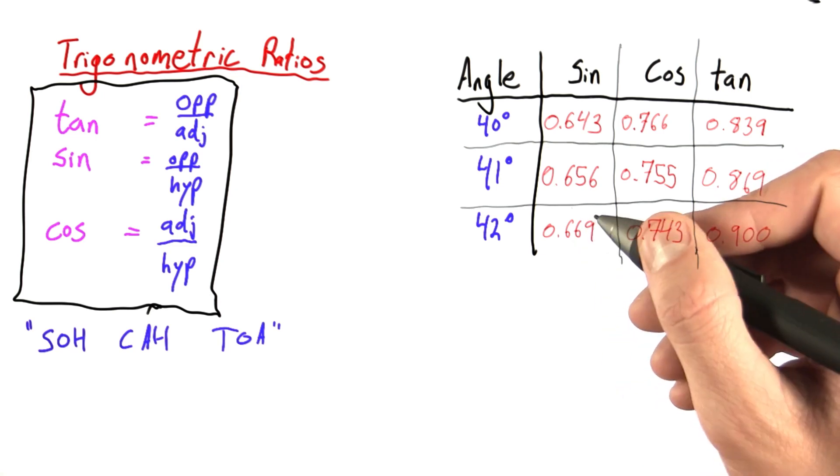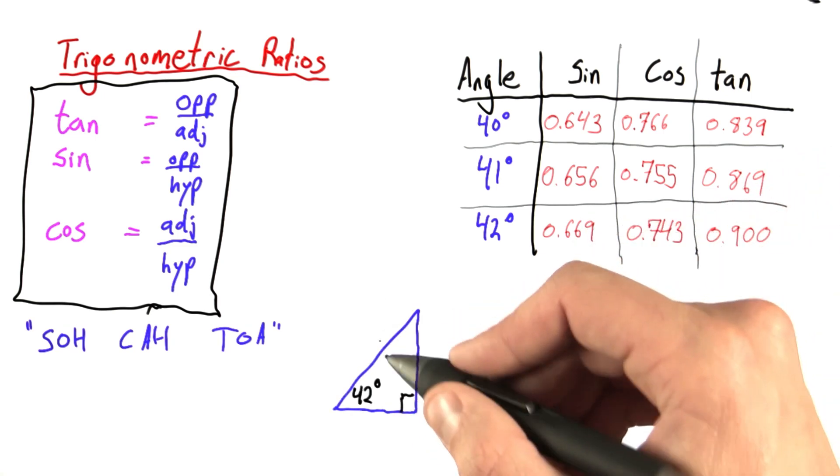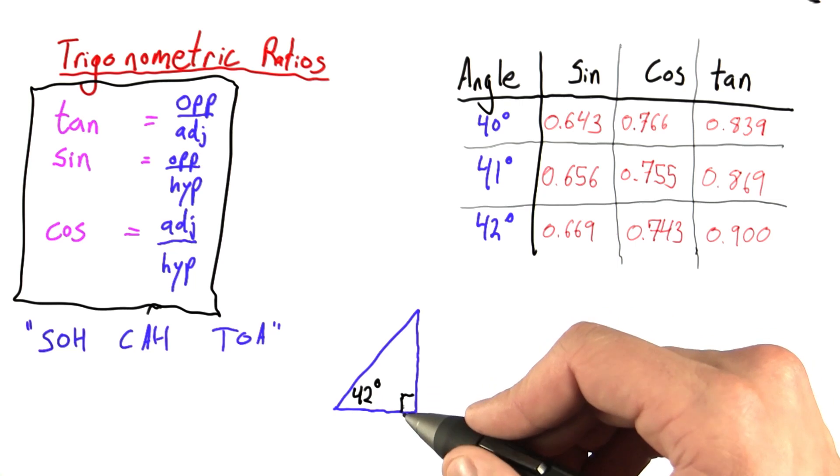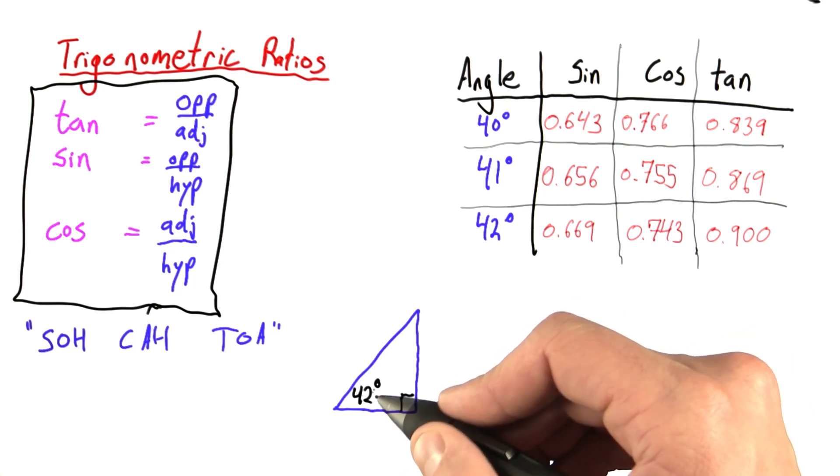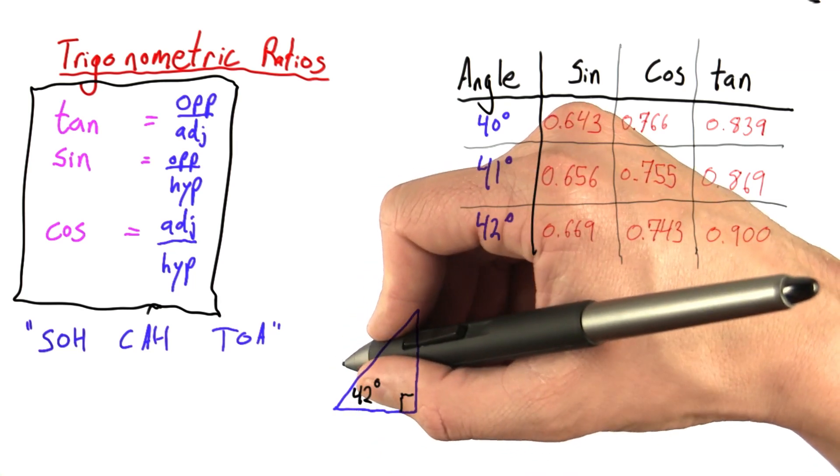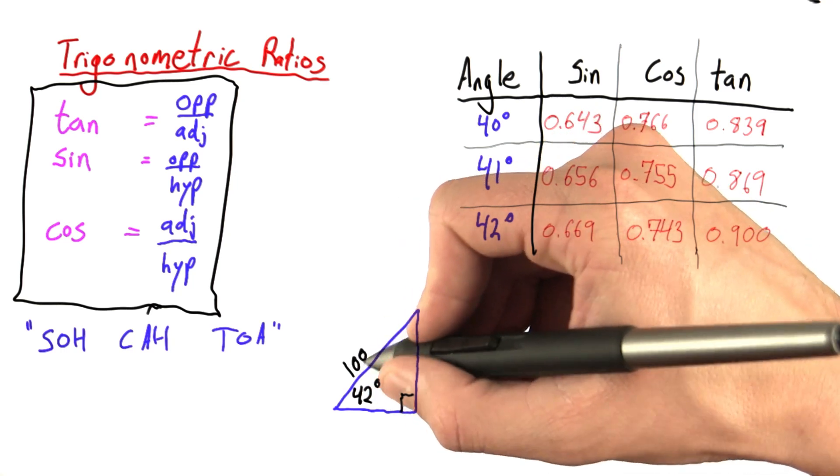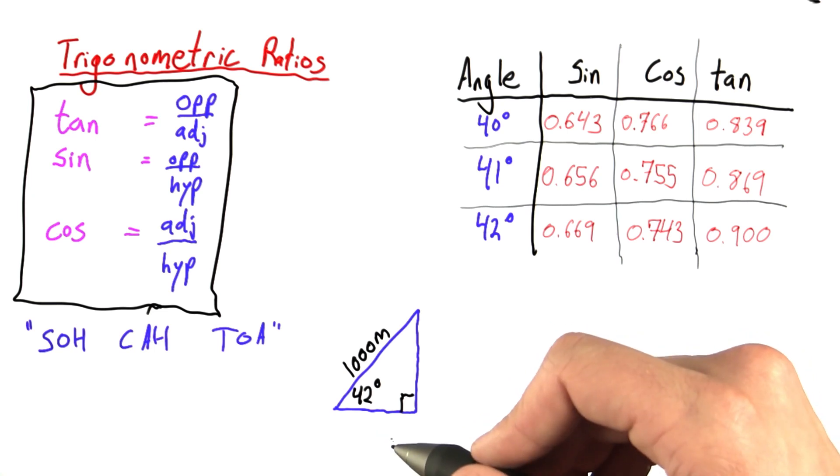What this table allows us to do is something really amazing. So, let's say we have a triangle, and it's a right triangle with an angle here of 42 degrees, and let's say we know this length. It's 1,000 meters. How can I find this length? This is something we haven't done yet.